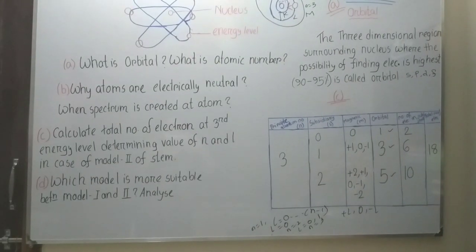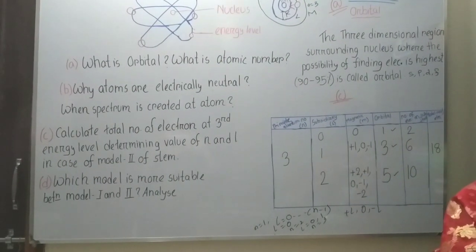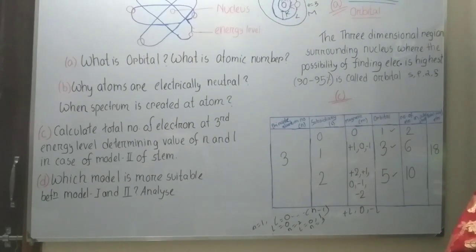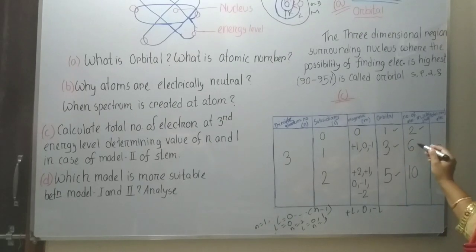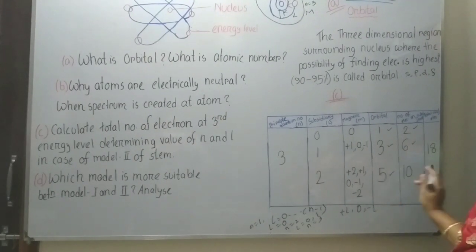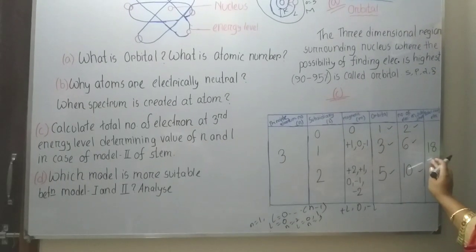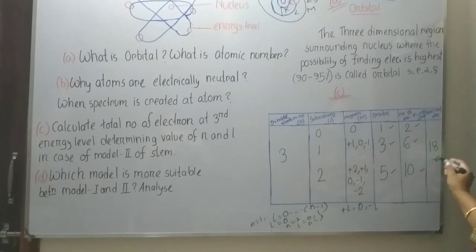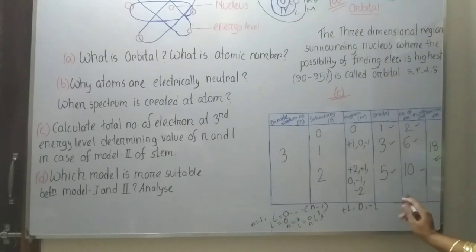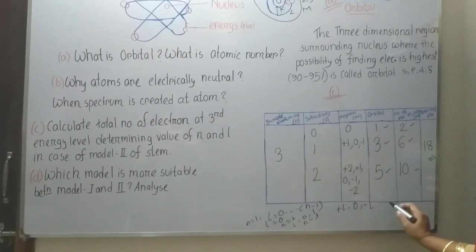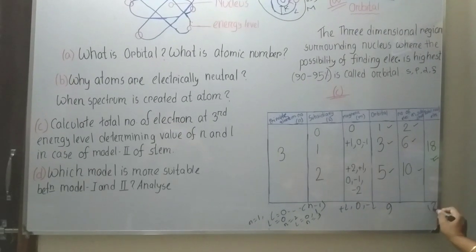In one orbital, a maximum of 2 electrons can exist. Therefore: 1 orbital holds 2 electrons, 3 orbitals hold 6 electrons, and 5 orbitals hold 10 electrons. By this way, the total number of electrons comes to 18. So the total number of orbitals in the third energy level is 9, and the total number of electrons is 18.